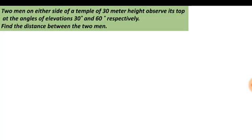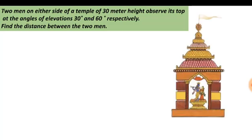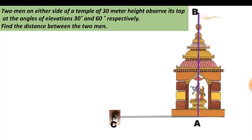We need to find the distance between the two persons. Let us first visualize this problem. Let us imagine a temple and assume it has height AB which is 30 meters, as given in the problem. Let us assume the position of the first person who is observing the top of the temple as C. From position C, the first person is observing the top of the temple.